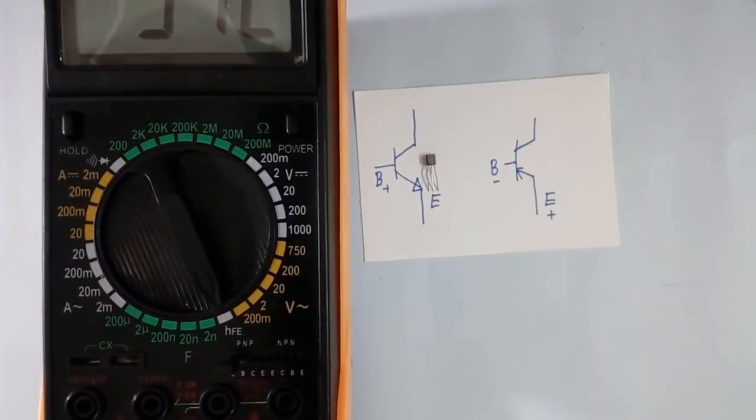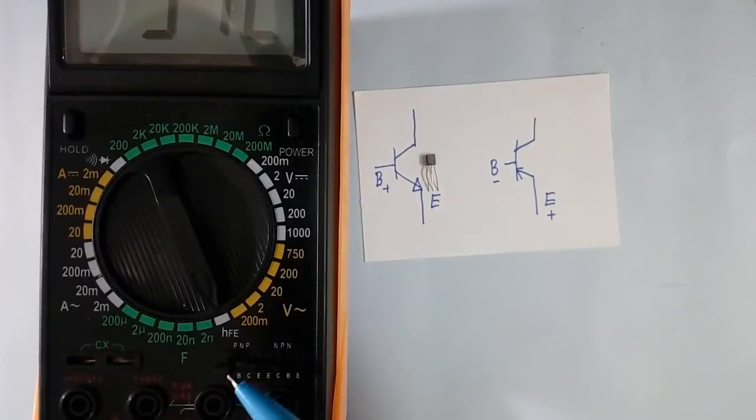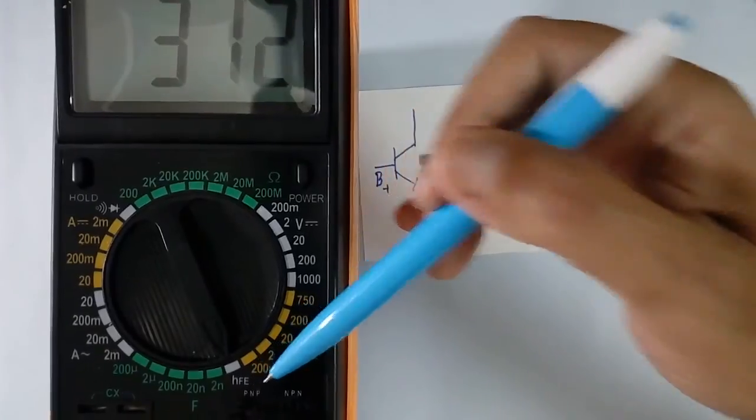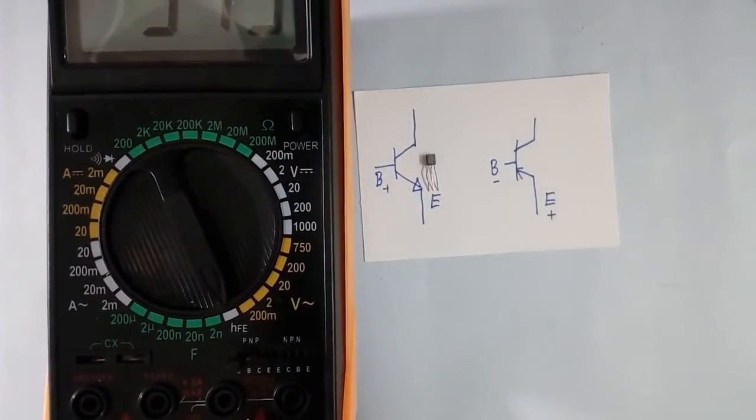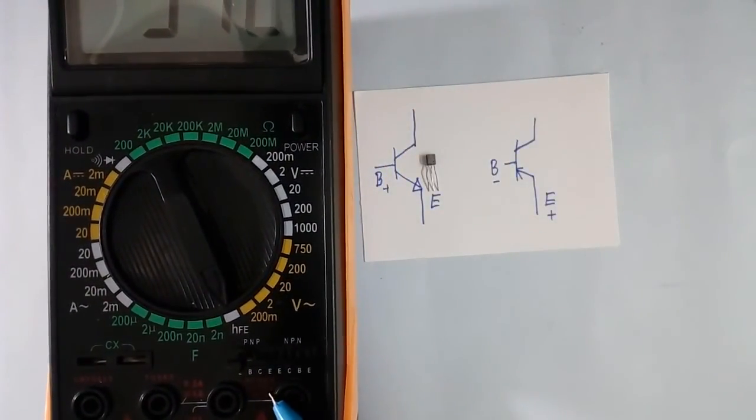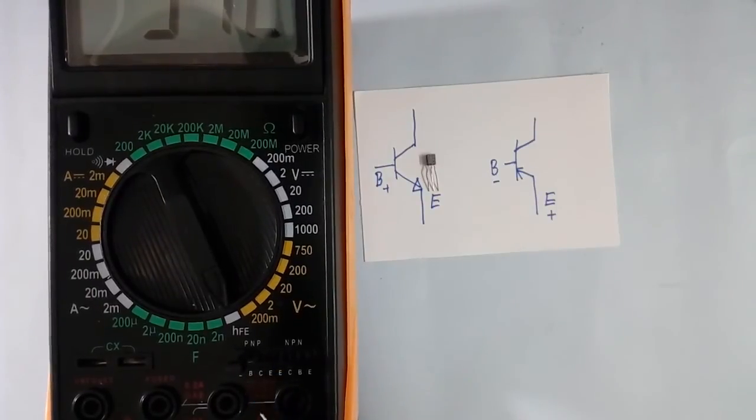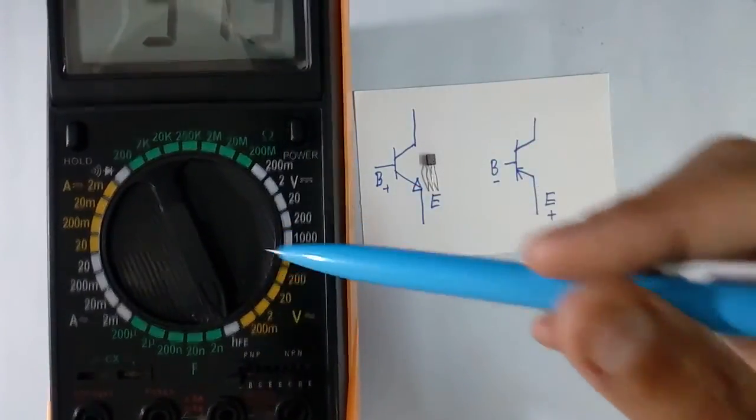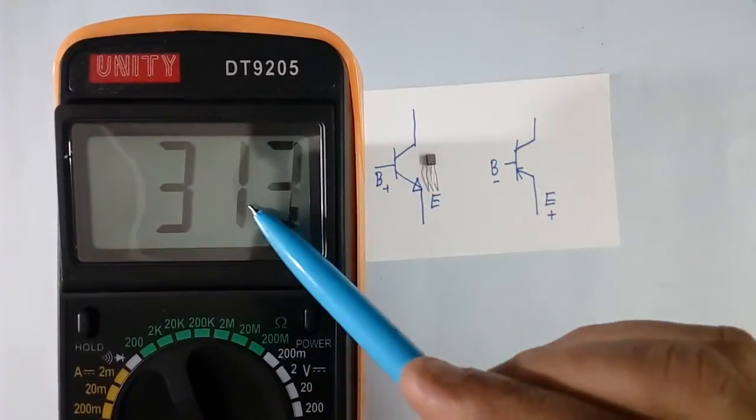Now we will measure HFE of PNP. This PNP transistor connected here because PNP is written here. And terminal EBC is written. So emitter will go to E. B will go to B. And collector will go to C. And switch position HFE. HFE is coming 313.